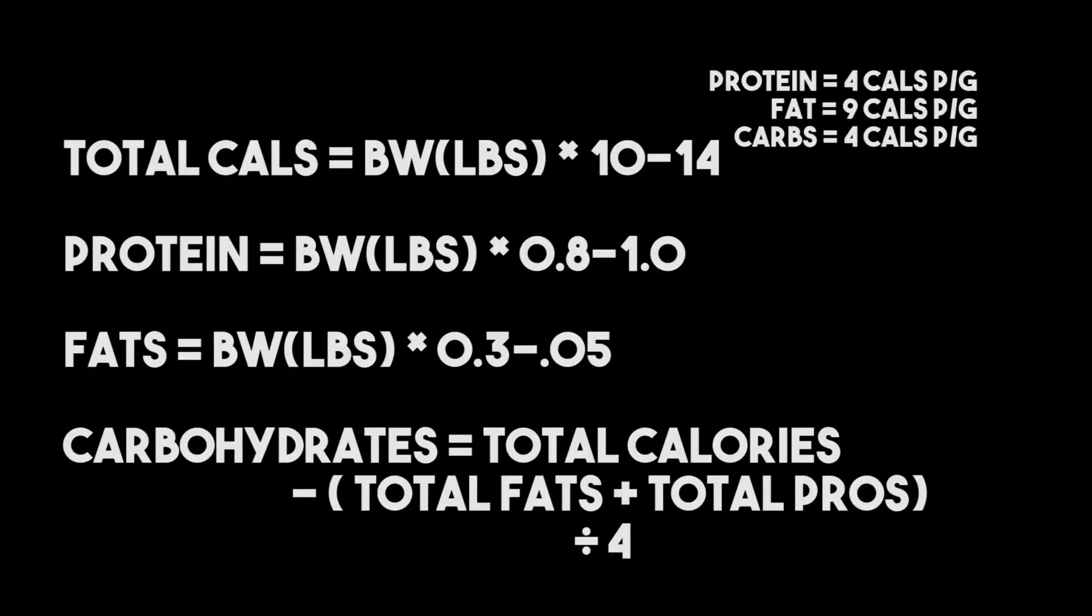So in summary, to work out your calories and macros, you need to multiply your body weight in pounds by 10 to 14 based on your activity level. You need to multiply your body weight in pounds by 0.8 to 1 to give you your total grams of protein. You need to multiply your body weight in pounds by 0.3 to 0.5 to give you your total amount of fat in grams based on preference. Protein has 4 calories per gram. Fat has 9 calories per gram. You need to minus the calories from your fat and protein from your total calories, and then divide the remaining number by 4 and that will give you your carbohydrates.